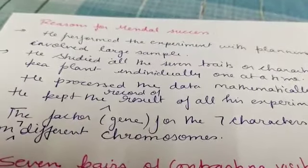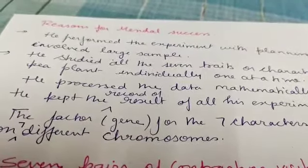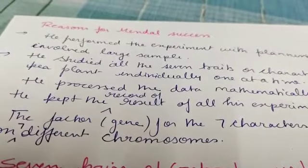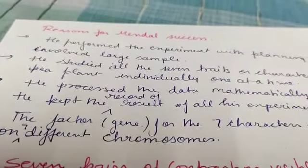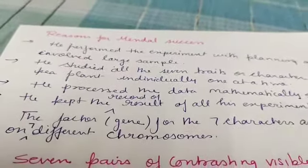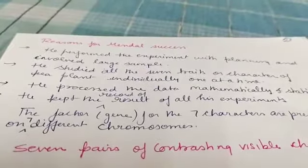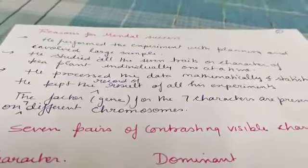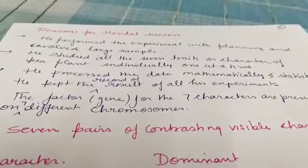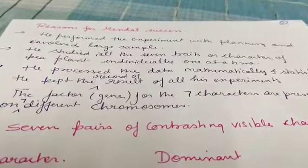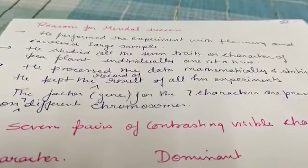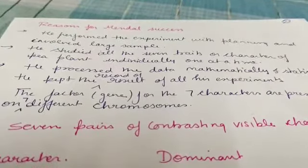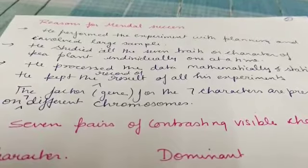The last reason is that Mendel was very lucky that all 7 characters are present on 7 different chromosomes. They are not present together — they are present on 7 different chromosomes, and that's why it was very easy for Mendel to study them.